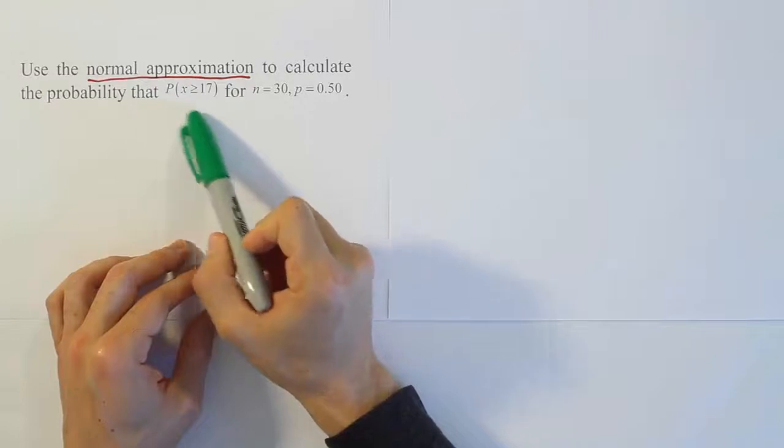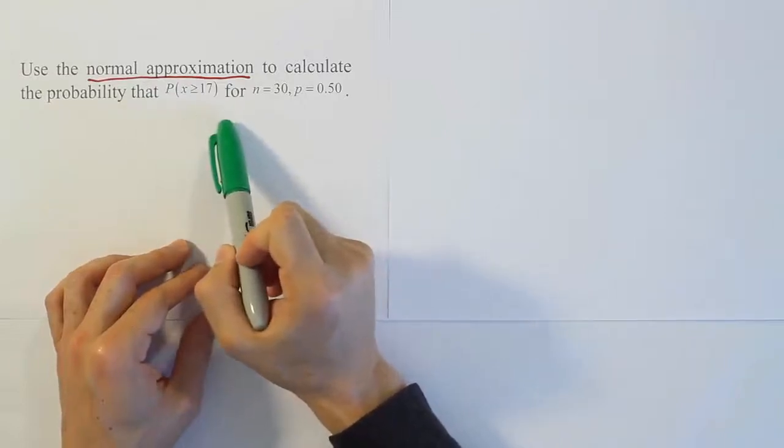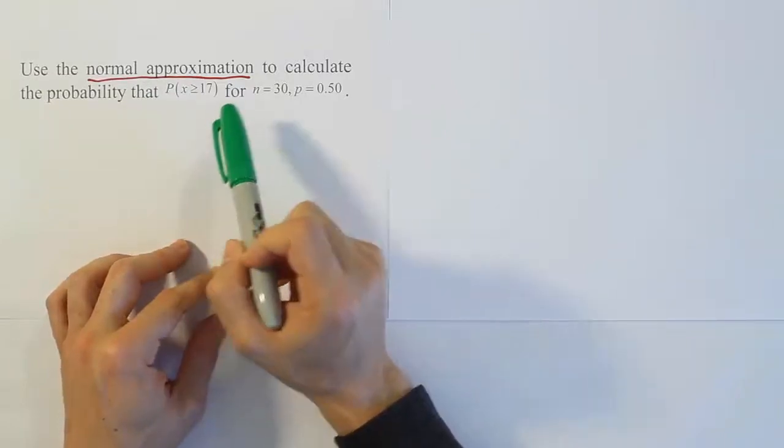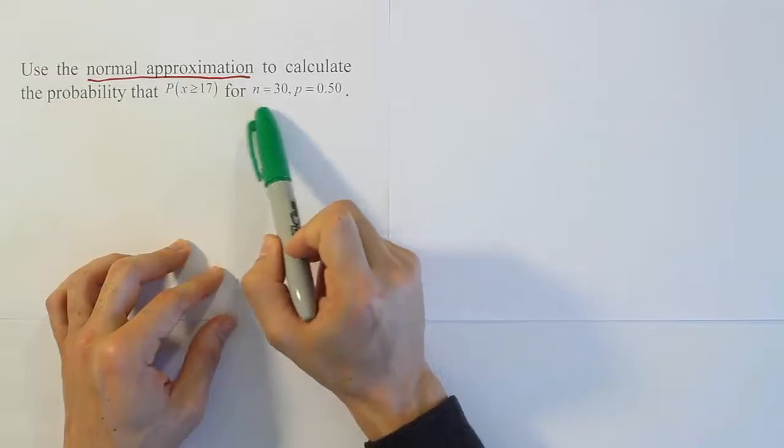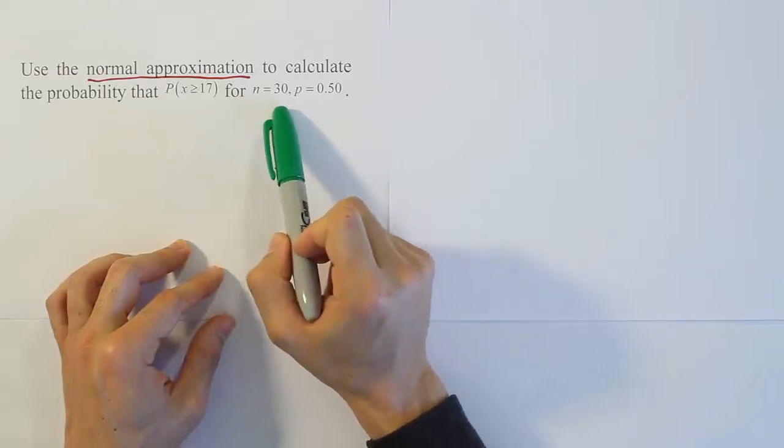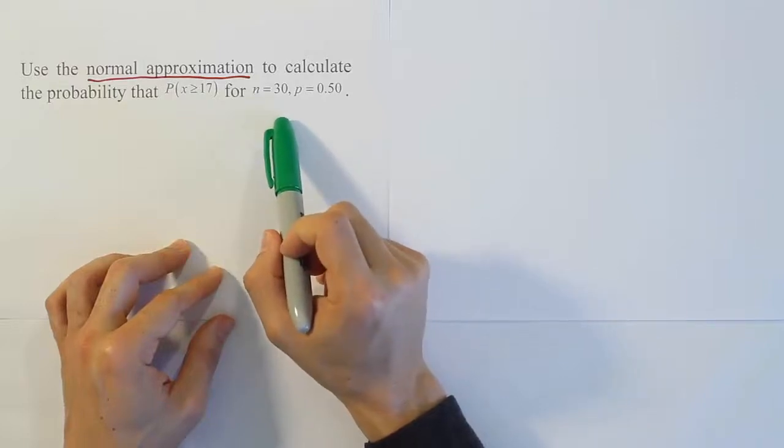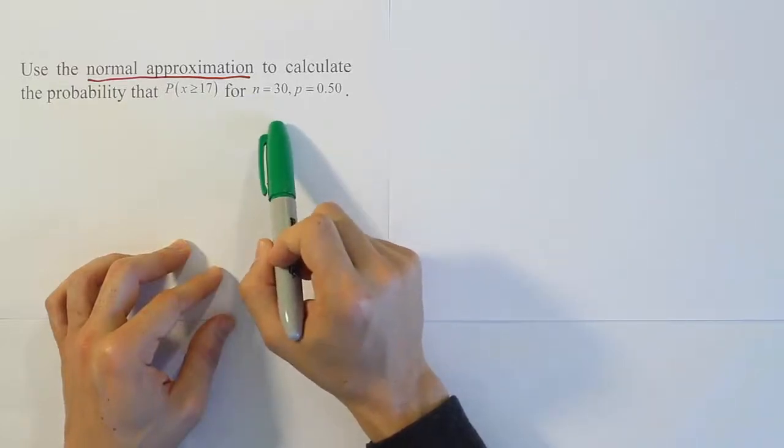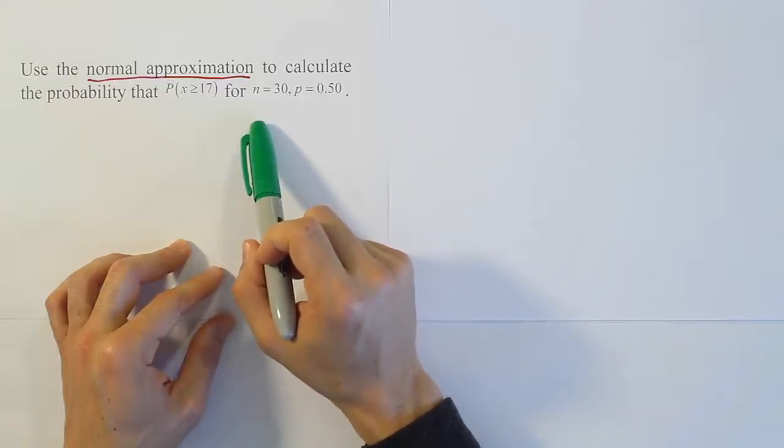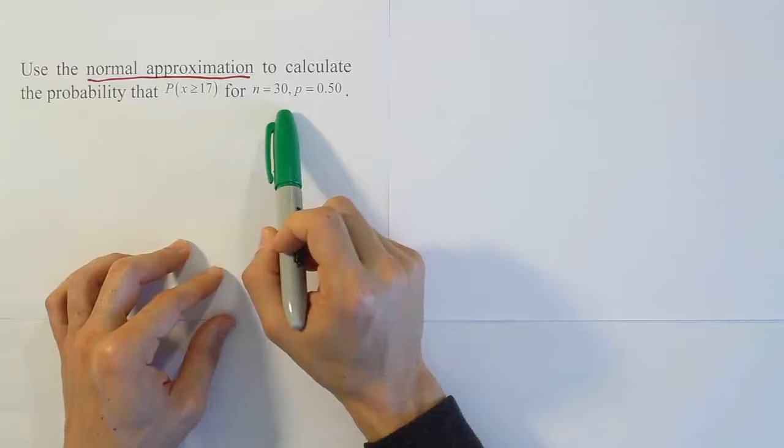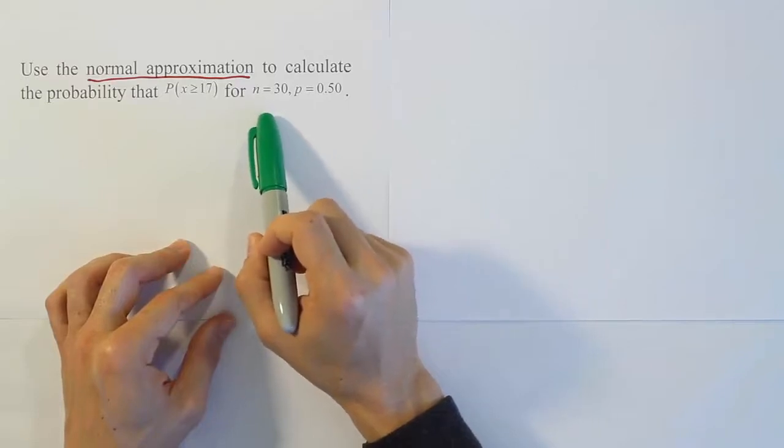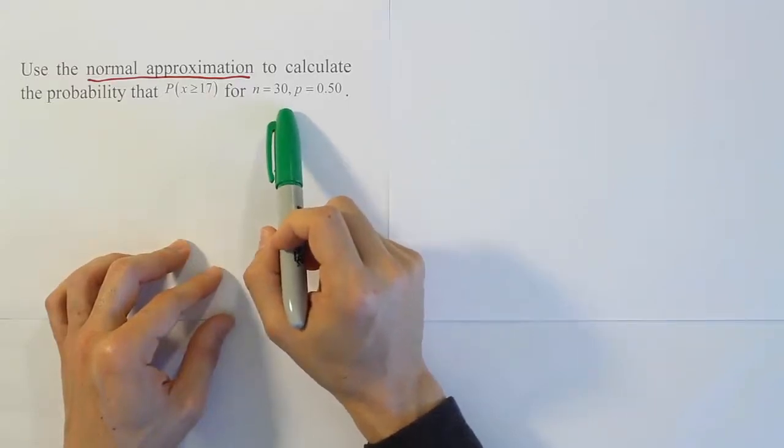I underline normal approximation because that's a very important phrase. It means we're going to use the bell curve to approximate this binomial probability. This is a very useful technique because when you look at sample sizes like this of 30, we notice that our tables don't typically go up that high. Those binomial tables will go to 20 and then skip a bunch of values and just give you n equals 25. But they don't have anything between 20 and 25 typically and they don't have anything after 25. So when you have n is 30, you're kind of stuck because at that point you don't know where to get the probabilities from.